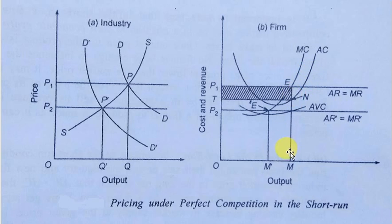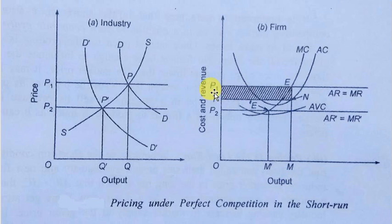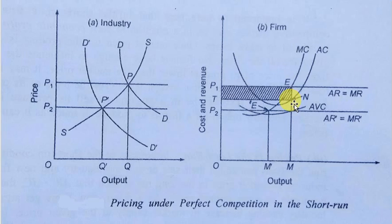In the short run, the market-fixed price is accepted by firms, which produce output OM and earn super normal profit — also called economic profit — equal to the area P1TNE. Average revenue at point E is greater than average cost at point N, confirming the super normal profit earned.